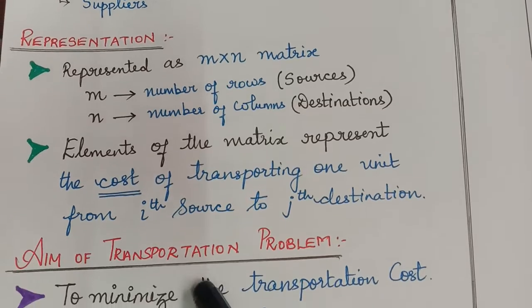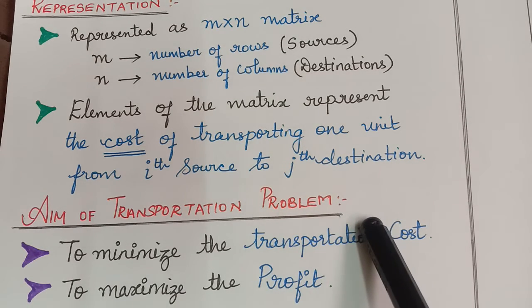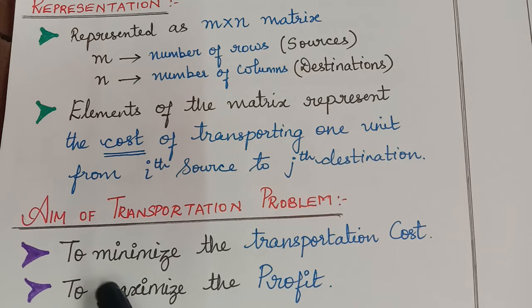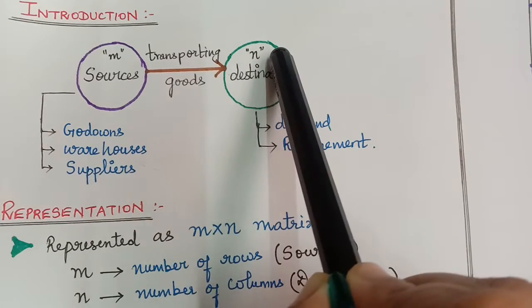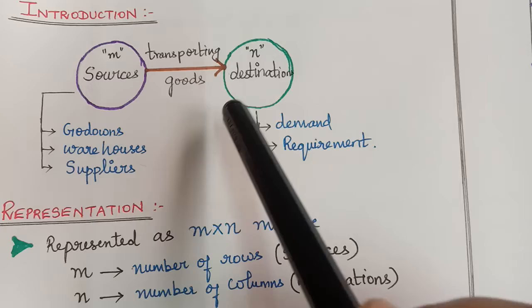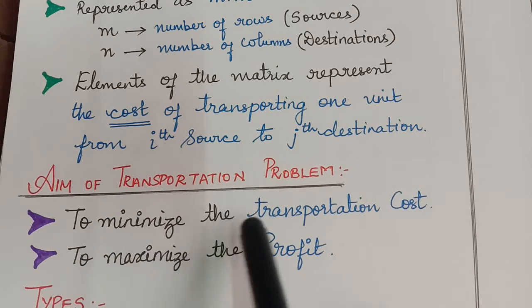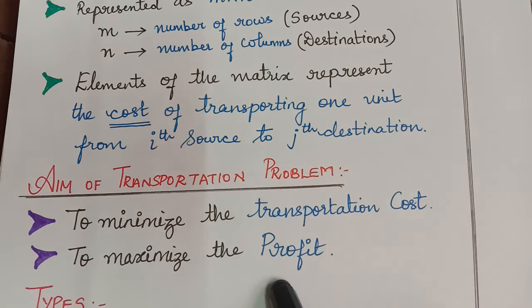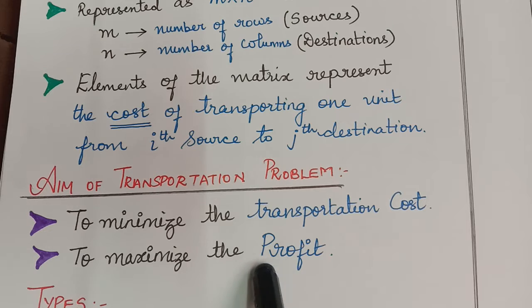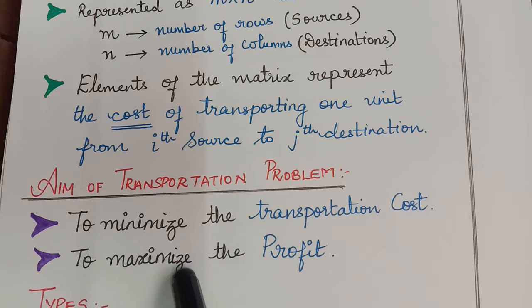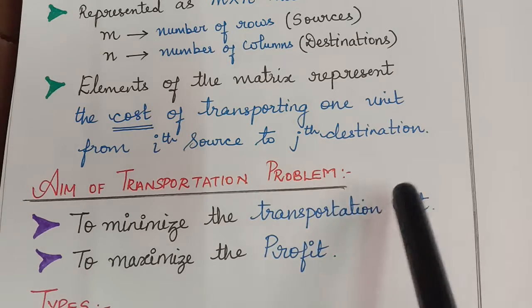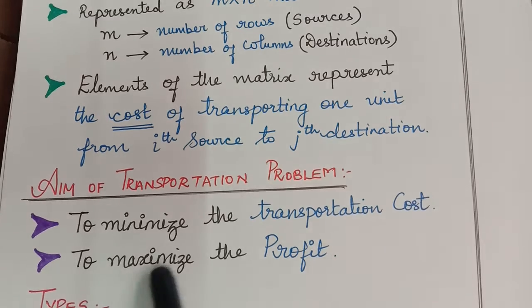The aim of a transportation problem is to minimize the transportation cost. That is, we want to transport goods from M sources to N destinations, and this will carry some cost which we want to minimize. We can also say that we want to maximize the profit — the profit obtained by transporting the goods has to be maximized. Every time we do business, we want to maximize our profit and reduce the cost. So the main aim of this transportation problem is to minimize the transportation cost and to maximize the profit.